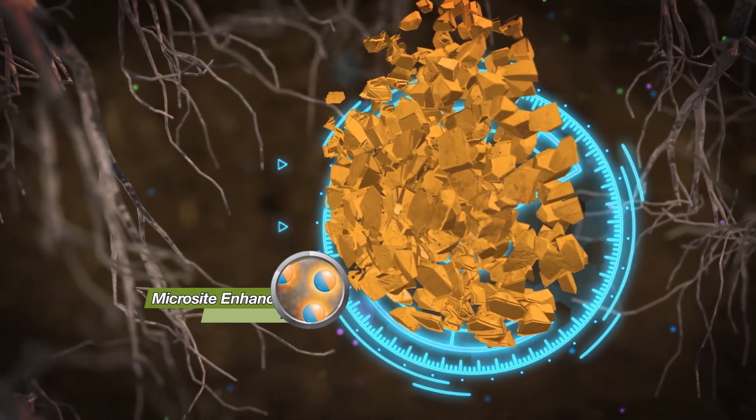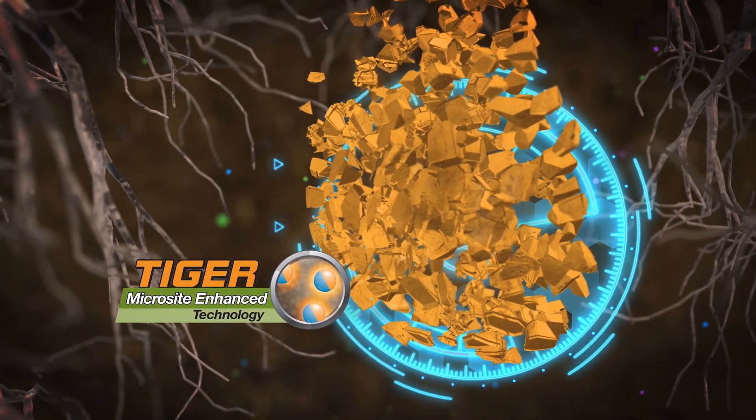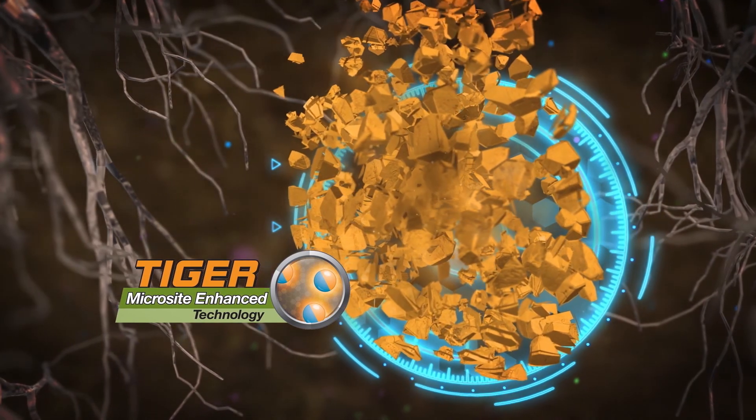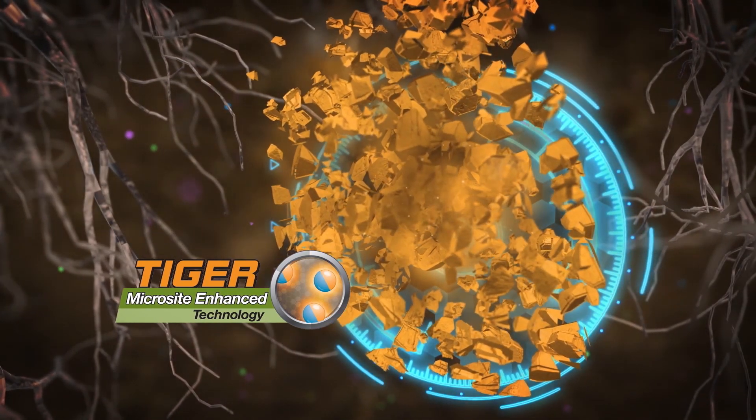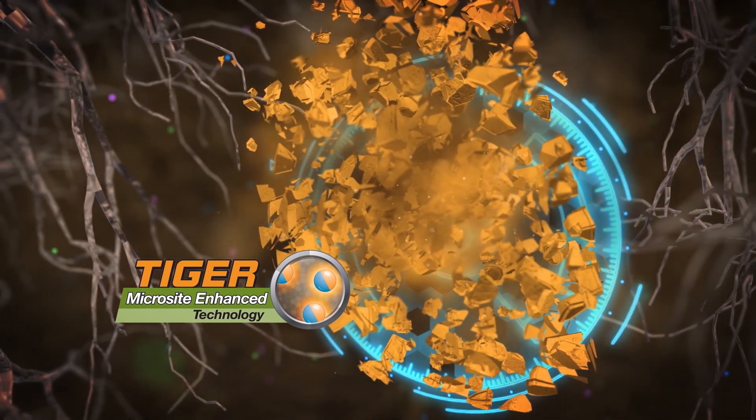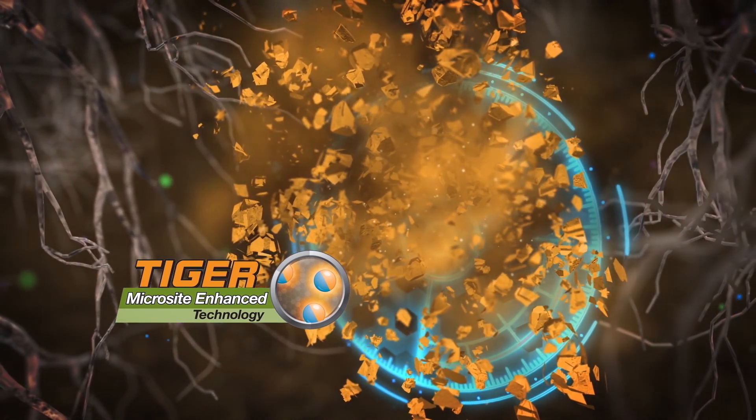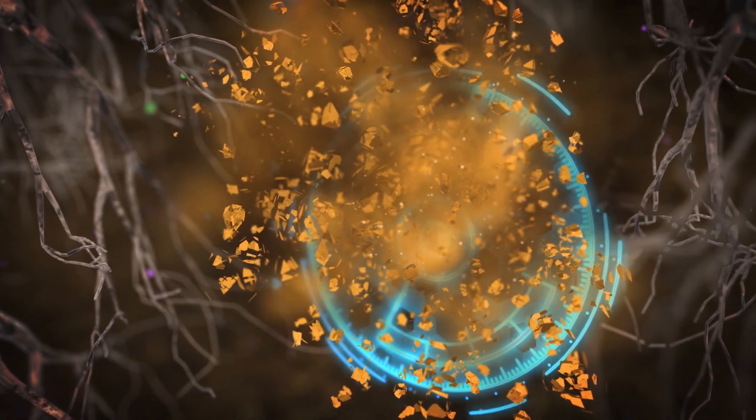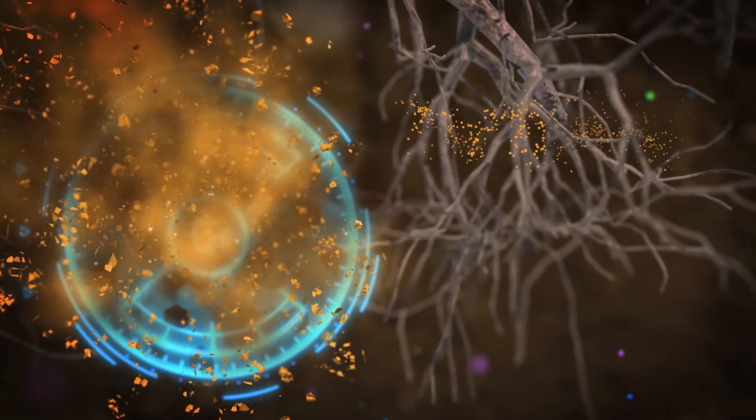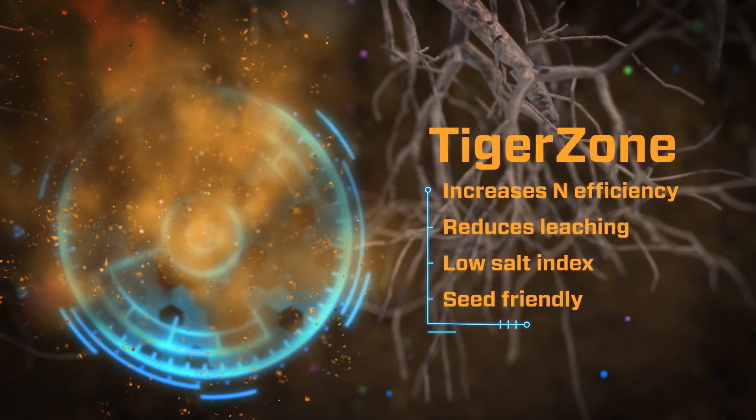Through microsite-enhanced technology, millions of sulfur particles disperse to form a Tiger Zone in the soil. The Tiger Zone converts sulfur to plant-available sulfate while also oxidizing both macro and micronutrients into more plant-available forms throughout the growing season. This minimizes loss or tie-up of nutrients in the soil.